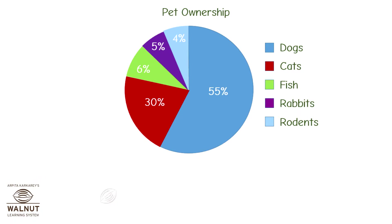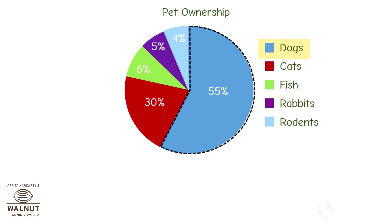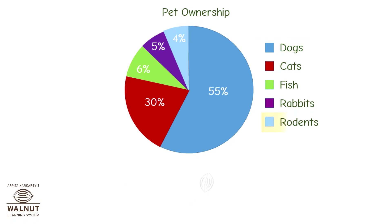Looking at this, you quickly get an idea that dogs are the most popular pets, as more than half of the people have them. In the pie chart, the value is 55%. You can also see that rodents are the least popular pets — in the pie chart, the value is 4%.